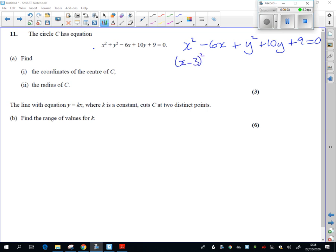I'm going to halve the coefficient of x and then subtract 3 squared. I'm going to halve the coefficient of the 10y and then subtract 5 squared. And then take the constants all over the right hand side because that will give me the radius.